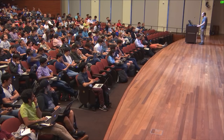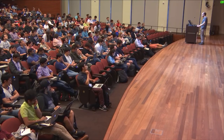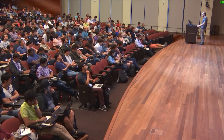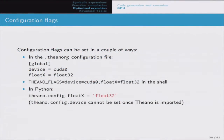You usually want to use float32 or even float16 for storage since most GPUs don't have good performance for double precision. To set configuration flags, you have the THEANORC configuration file, environment variables which override the config file, or you can set things directly from Python. Some flags must be known before Theano is imported - for instance, the device itself has to be set in the configuration file or through environment flags.